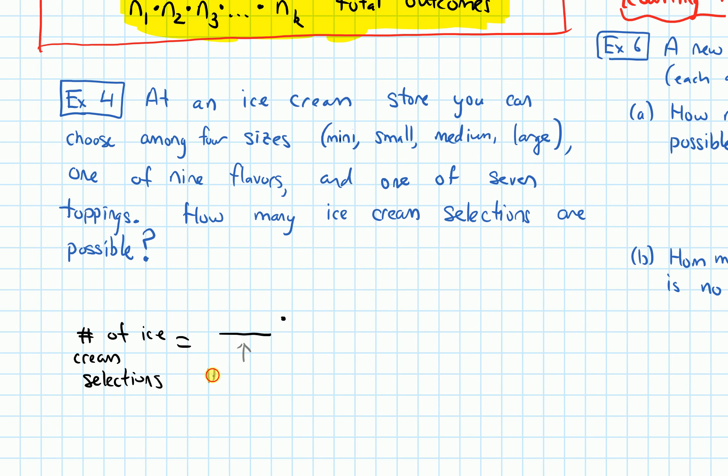The number of, let's say we worry about sizes first, number of size choices. So how many choices are there? Well, there's four choices for the size. And then we have the next stage.